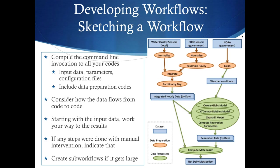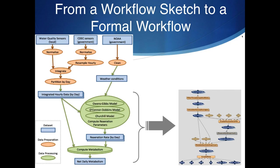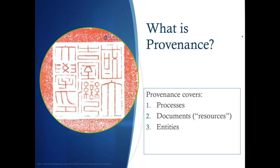Here's the original sketch and the actual computation workflow side by side — they're quite close, though the actual workflow adds a final script to create plots of metabolism variables. The workflow captures the general method: how codes work together. Provenance, by contrast, is about when you actually ran all the codes and generated a specific figure — exactly what parameter values you used, what data you ran.